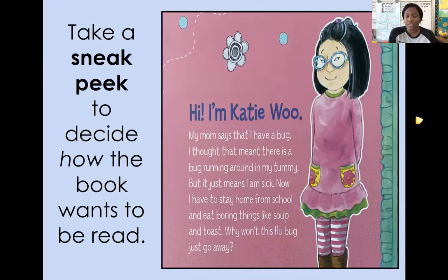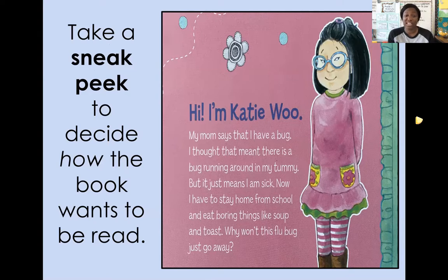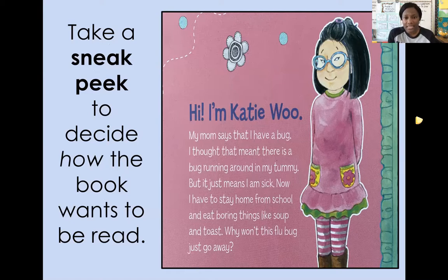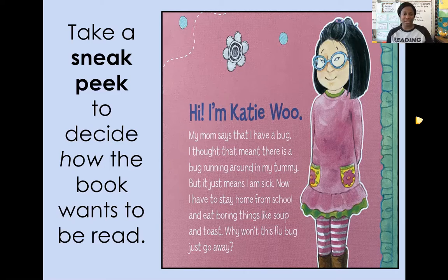Now let's also check the back. There's a blurb. Let's read this blurb and see if there's any more information that helps us decide how to read the book. It says: 'Hi, I'm Katie Wu. My mom says that I have a bug. I thought that meant there's a bug running around in my tummy, but it just means I am sick. Now I have to stay home from school and eat boring things like soup and toast. Why won't this flu bug just go away?' So now I'm starting to think maybe it's not going to be such a sad and serious book — maybe I should change my voice, because she sounds like she has to stay home all day and she's bored. So maybe we should read it in a bored and annoyed voice.